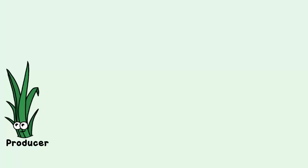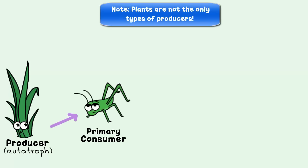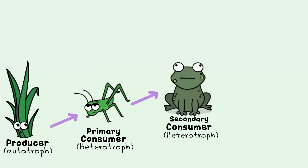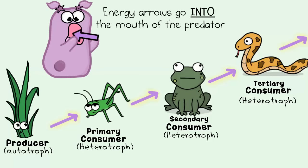A food chain starts with a producer. A producer is an organism that is an autotroph, which means that it makes its own food — a plant, for example. The plant is eaten by a primary consumer, this grasshopper here. Consumers are heterotrophs, which means that they need to feed on other organisms. The primary consumer is eaten by a secondary consumer, this frog. The secondary consumer is eaten by a tertiary consumer, this snake, and the food chain can keep going. Notice how the arrows are supposed to point in the direction of the one doing the eating, which makes sense because that's the direction of the energy flow.